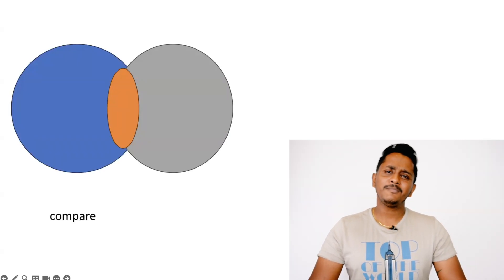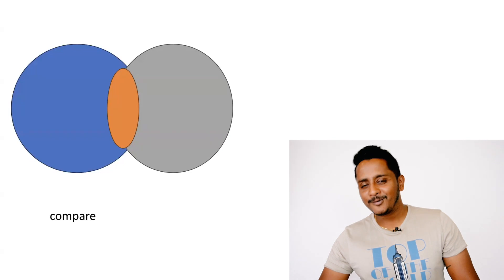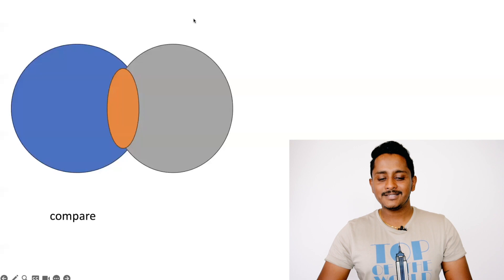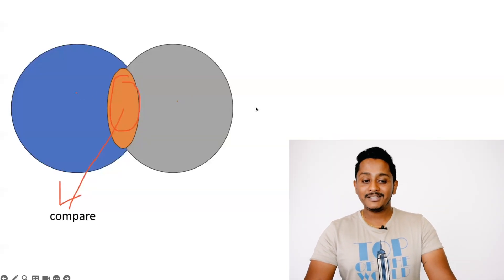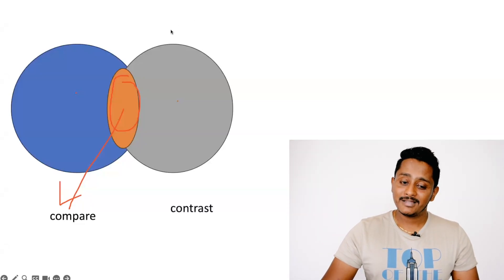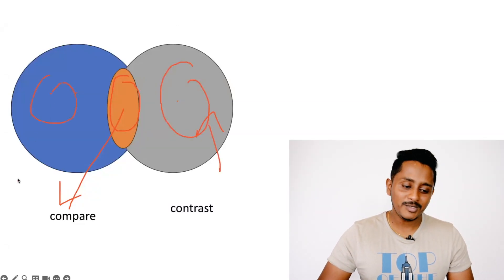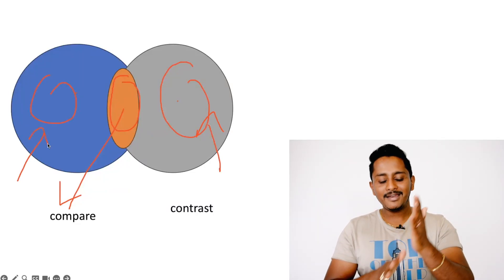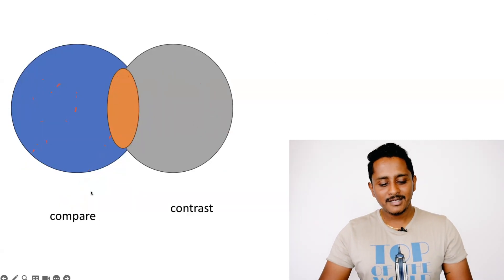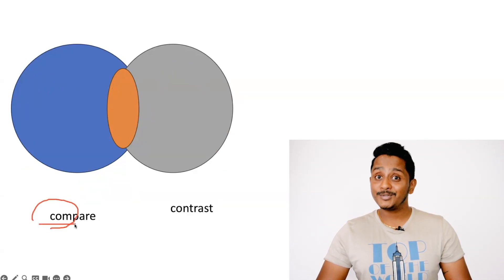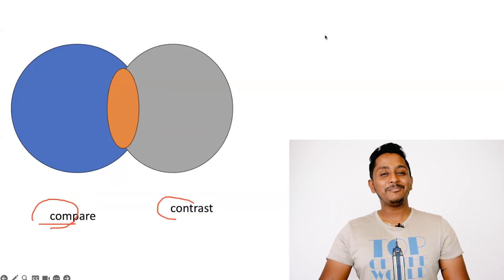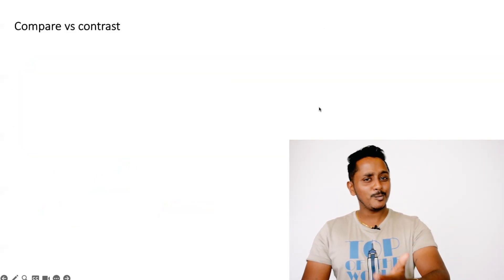To explain further, many people use the Venn diagram to understand the difference between compare and contrast. In this Venn diagram there are two things. The center — what is common between the two — that's compare. The rest, what is unique to each side, that's contrast. To remember this: 'compare' — come together; 'contrast' — contrary. You can remember the meaning using this.